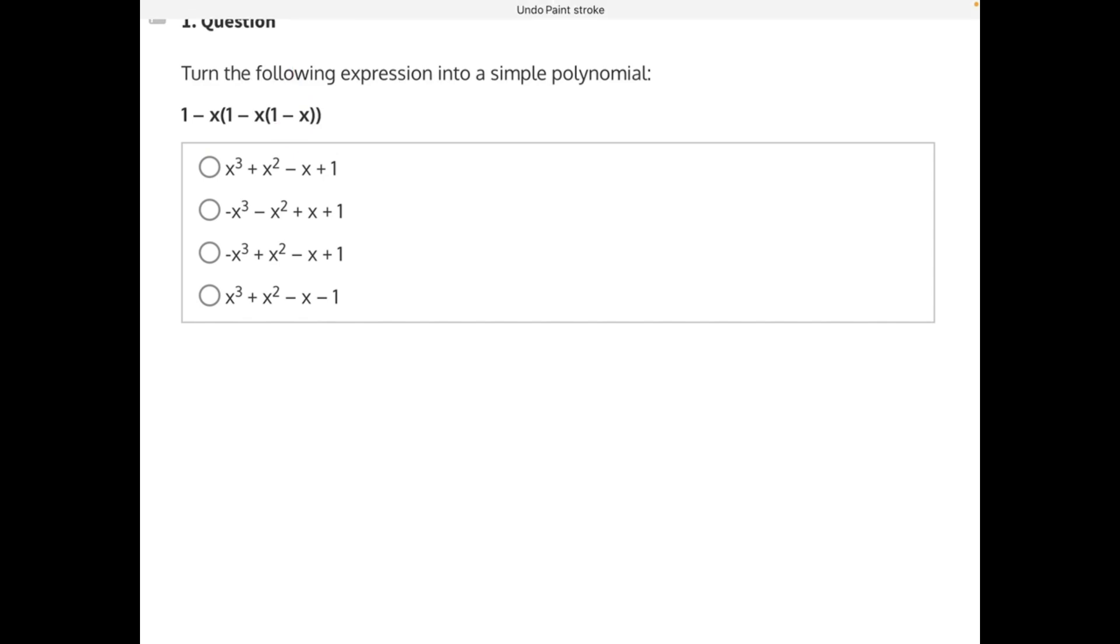So we need to distribute this negative x into the parentheses. Let's rewrite our expression until we get to that negative x and then distribute. Negative x times 1 would be negative x. Negative x times negative x would be positive x squared.